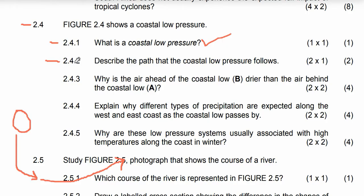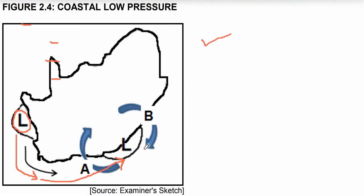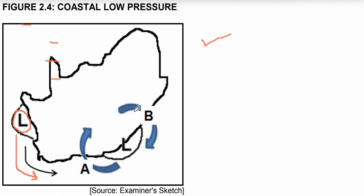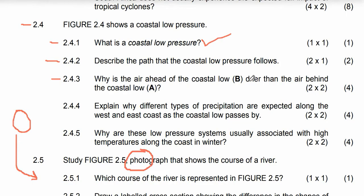Let's move to question 2.4.3: why is the air ahead of the coastal low B warmer and drier than the air behind the coastal low A? Let's look at why this air ahead of the system is drier than the air behind it.